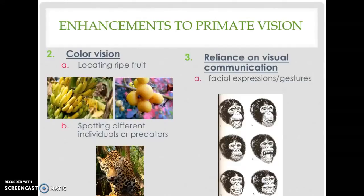Color vision is another enhancement to primate vision. Except in the prosimian primates, which tend to be nocturnal, color vision enhances daytime activities — including locating ripe fruit, which tends to be brightly colored. Primates are among some of the most colorful mammals on the planet, and color vision also helps in distinguishing individual members within your home group and those of other groups.